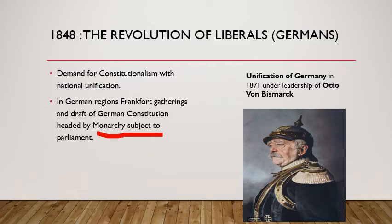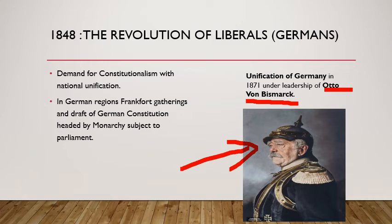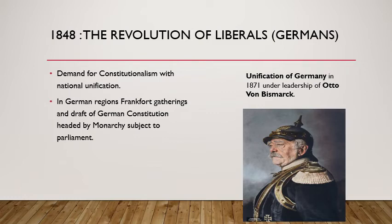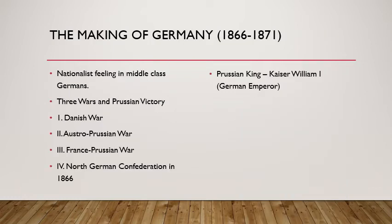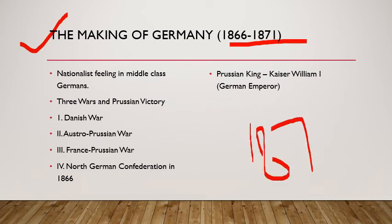From then on, Prussia took on the leadership of the movement for national unification. Otto von Bismarck, the chief minister of Prussia, was the architect of German unification. He achieved this with the help of the Prussian army and bureaucracy. There were three wars over seven years — with Austria, Denmark, and France — ending in Prussian victory, completing the process of unification. In January 1871, the Prussian King William I was proclaimed German Emperor in a ceremony held at Versailles.